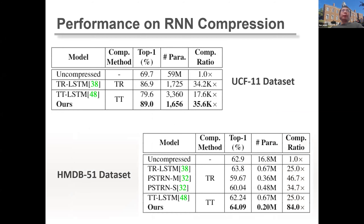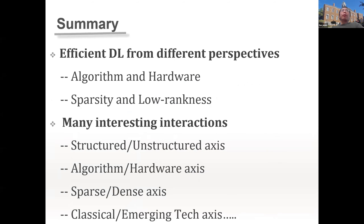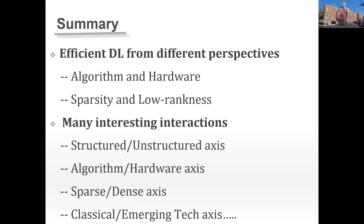In summary, efficient deep learning can be explored from both the algorithm and hardware sides using sparsity or low-rankness. Considering different angles — algorithm vs. hardware, sparse vs. dense, classical vs. emerging hardware techniques, digital vs. analog — there are many interesting interactions and exciting opportunities waiting to be explored. Thank you, that's all for my talk.